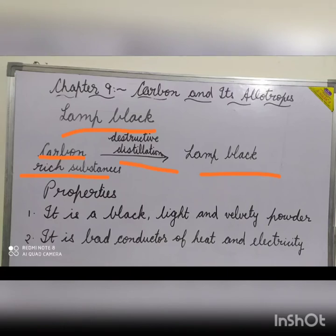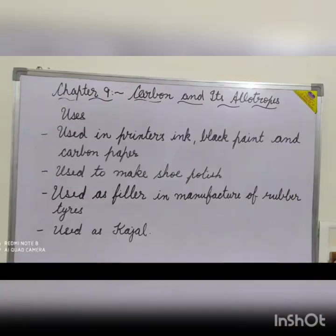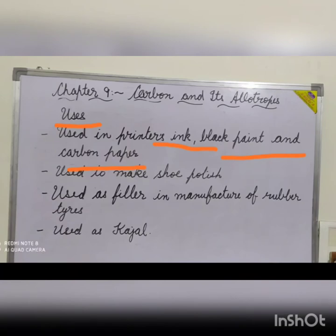Lamp black contains 98 to 99 percent carbon. Properties: it is a black, light and velvety powder, and a bad conductor of heat and electricity. Uses of lamp black: it is used in printer's ink, black paint and carbon paper. It is also used to make shoe polish. It is used as a filler in the manufacture of rubber tires. It is also used as kajal.